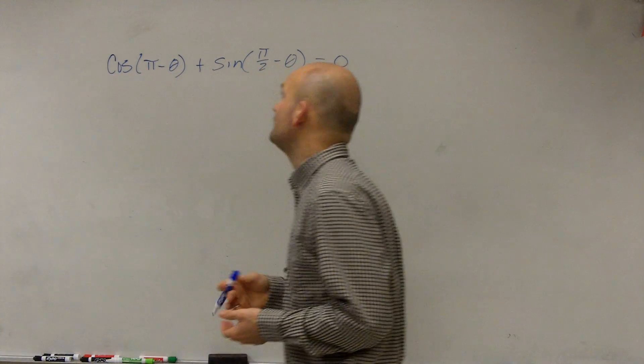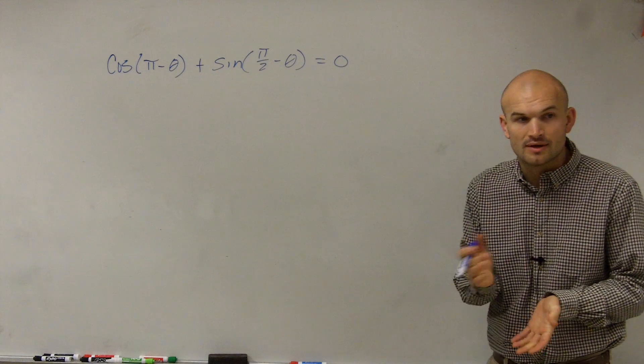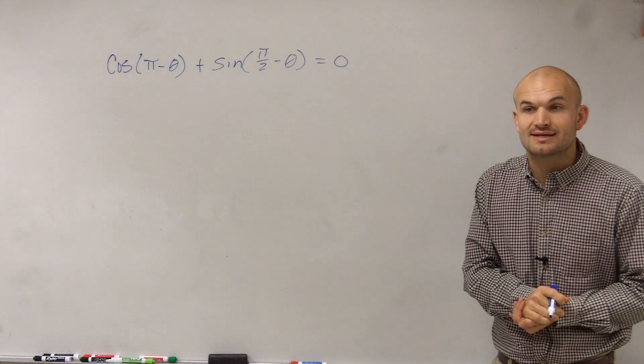So on a problem like this, we have cosine of pi minus theta plus the sine of pi halves minus theta equals 0. And what we want to do is we want to verify this identity.